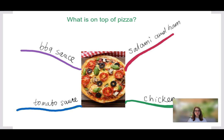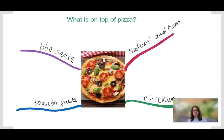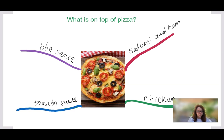Now look at the same information organized as a mind map. On top of pizza: barbecue sauce, tomato sauce, chicken, salami, and ham. This mind map could be improved by adding pictures of each item, and could branch out further. It's important to use only one idea per branch — for example, sauces go on one branch branching into barbecue, tomato, and white sauce, while toppings go on a separate branch. Use different colors for each idea.